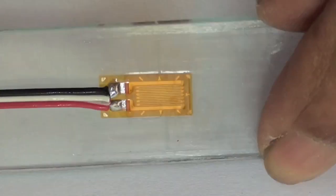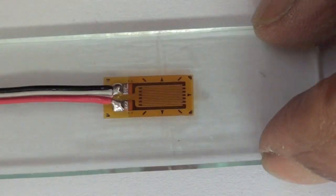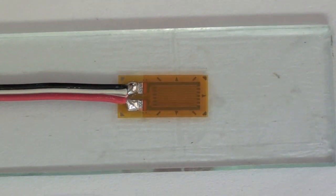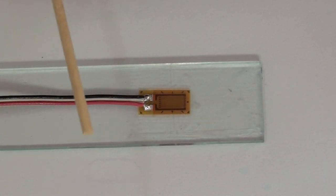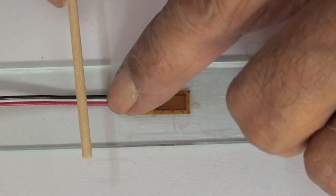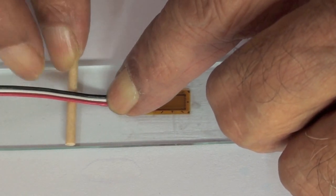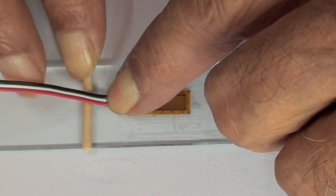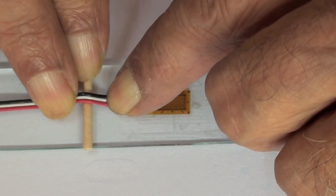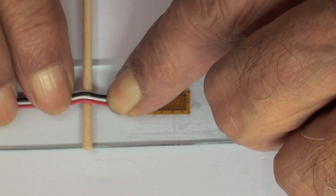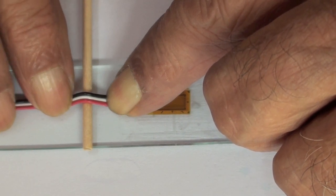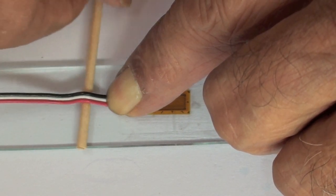In all strain gauge installations, it is very desirable to have some flexibility in the lead wires to minimize the possibility of breaking of the solder joints due to differential movement between the beam and the wire during testing. This is done by clamping the lead wire near the solder joints, then pressing a small round object under the wire and pressing the wire down on the other side to create a strain relief loop in the wire.